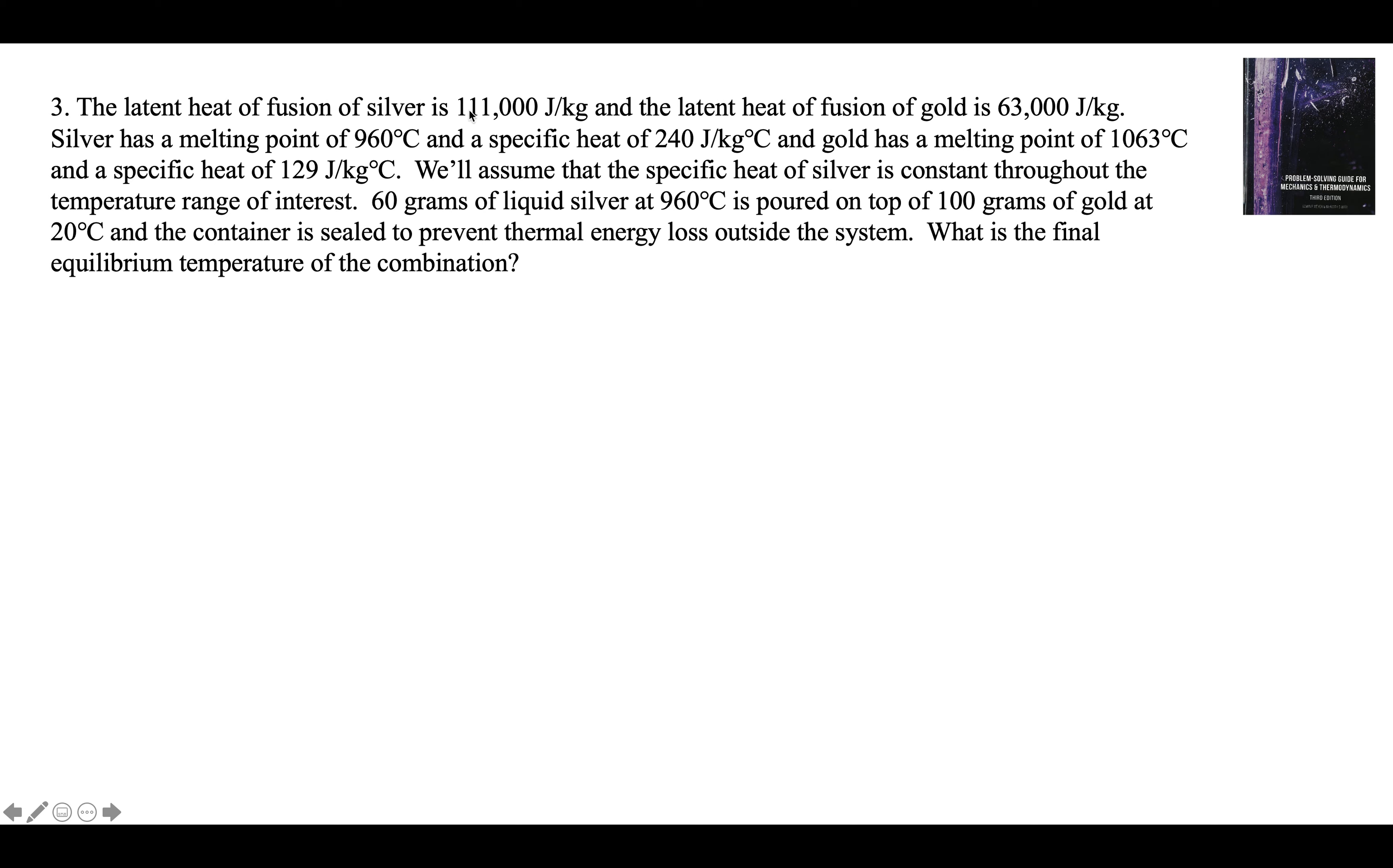Latent heat of fusion of silver is 111,000 joules per kilogram and latent heat of fusion of gold is 63,000 joules per kilogram. Silver has a melting point of 960°C. 60 grams of liquid silver at 960°C is poured on top of 100 grams of gold at 20 degrees Celsius. The container is sealed to prevent thermal energy loss outside the system. What is the final temperature of the combination?